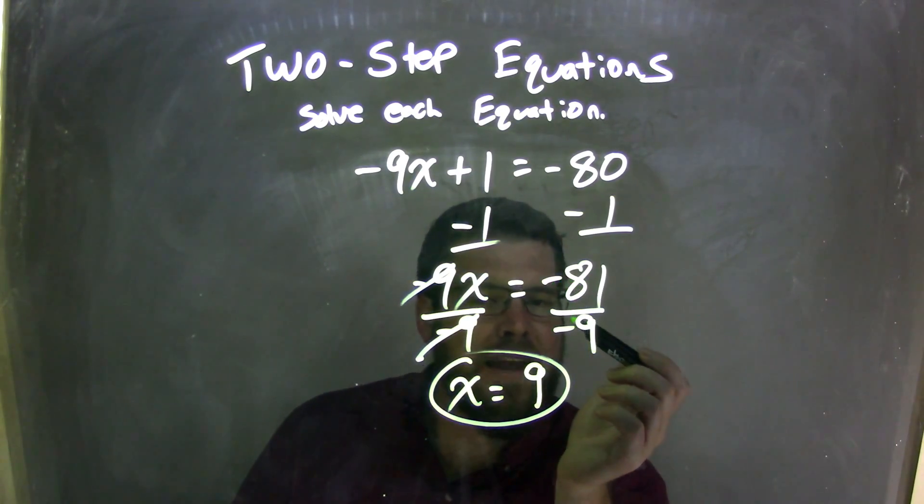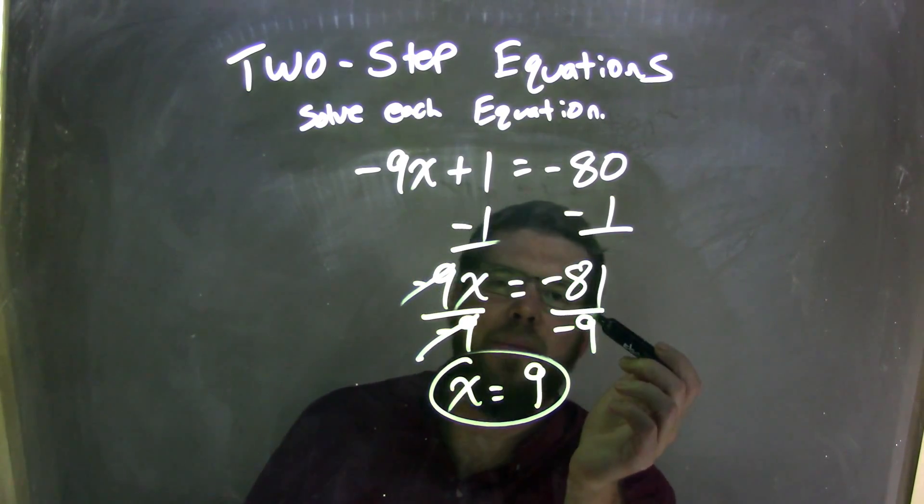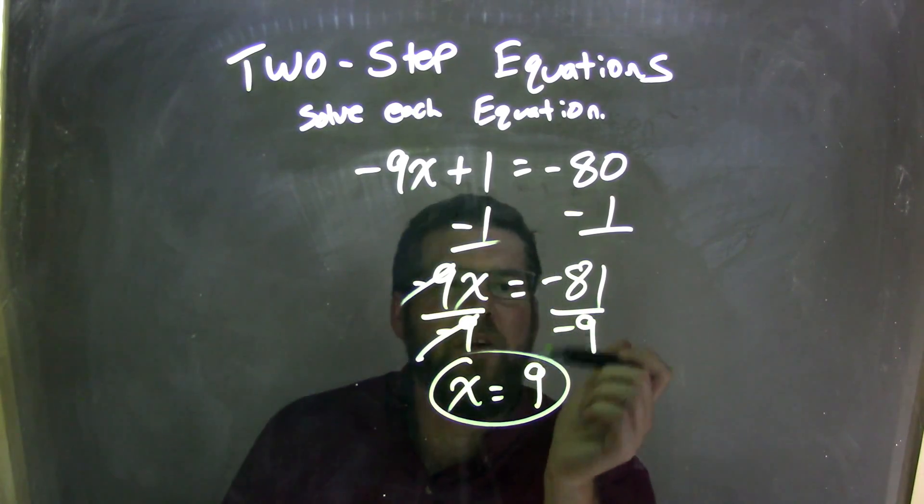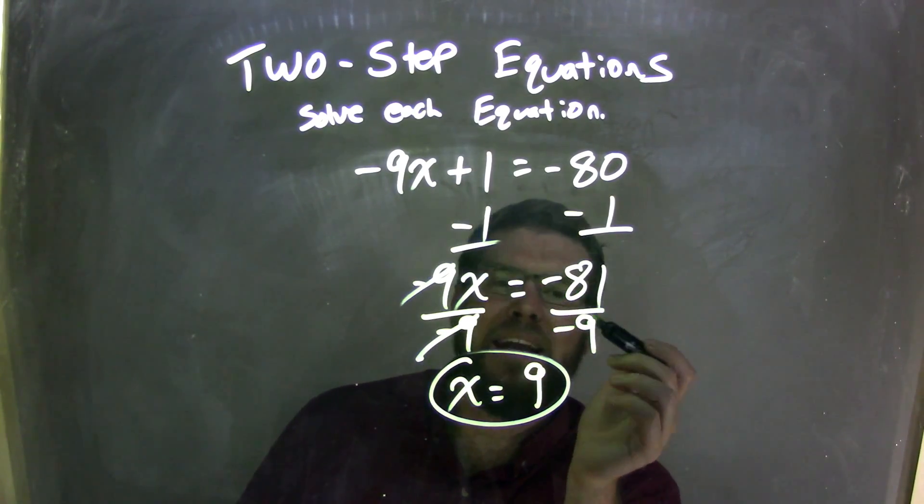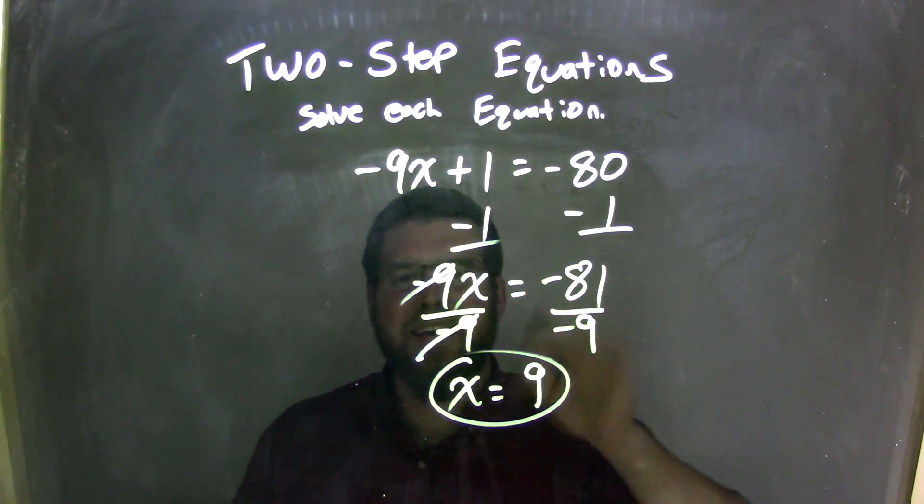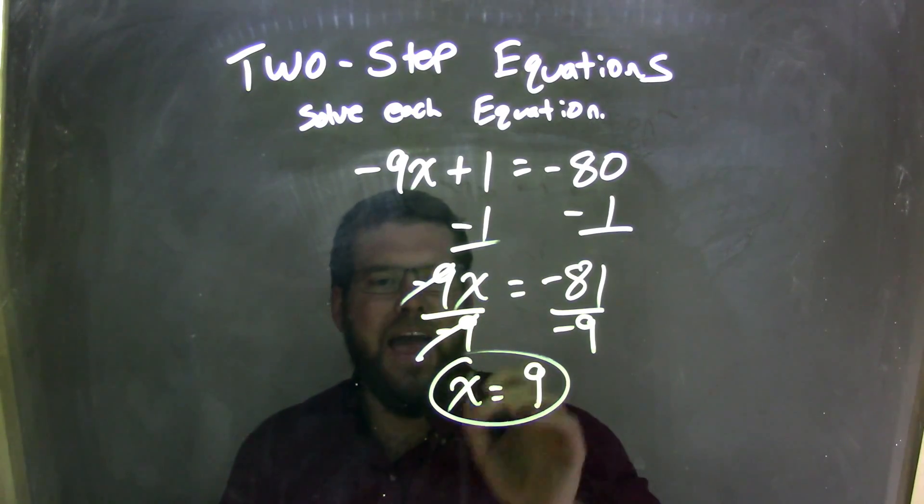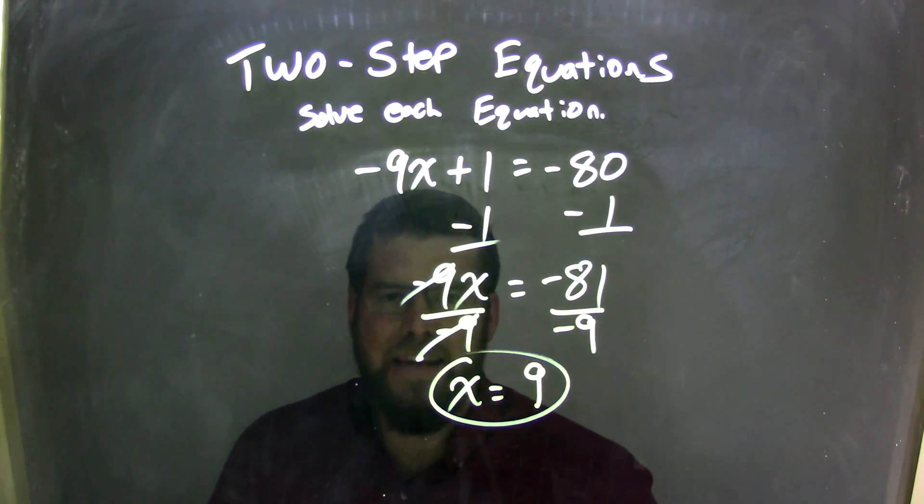Knowing that a negative divided by a negative is a positive, and 81 divided by 9 is 9, therefore negative 81 divided by negative 9 is positive 9, giving me my final answer of x equals positive 9.